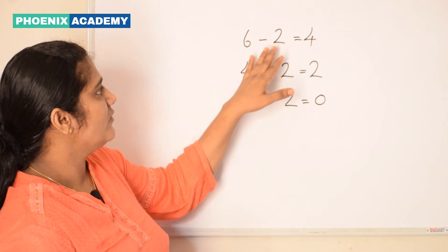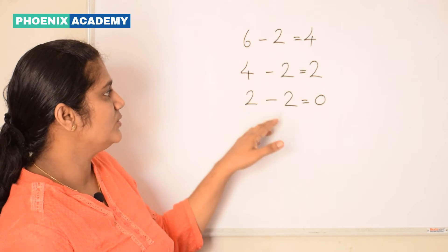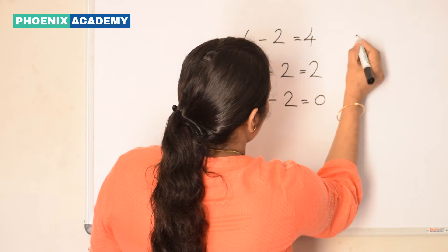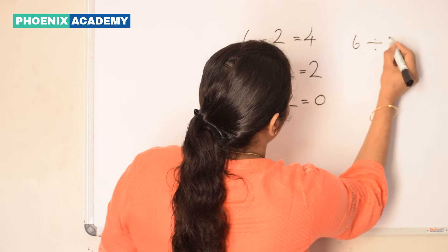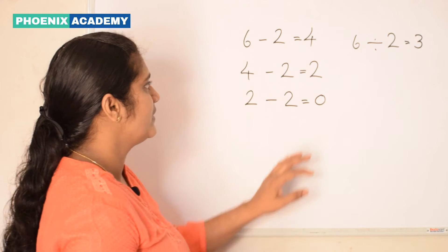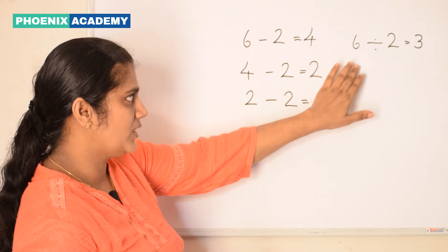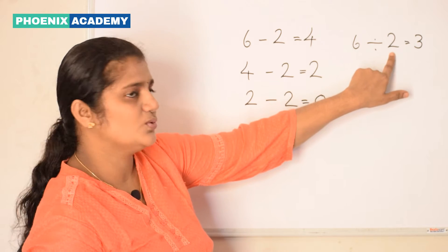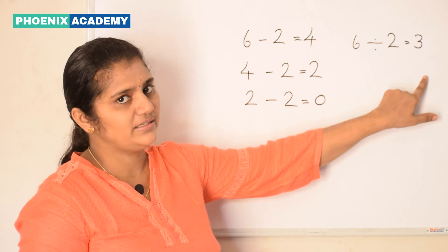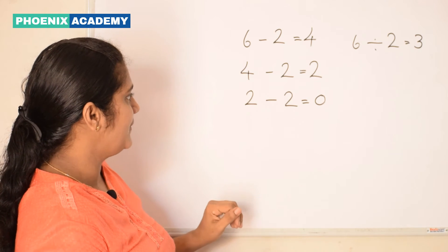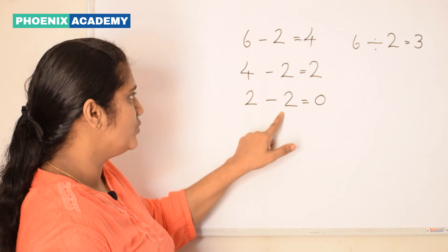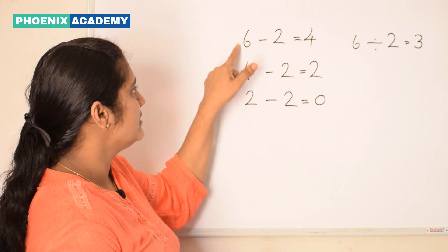How we got this? We subtracted 2 three times till we reached 0. So we can say 6 divided by 2 equal to 3. We divided the total number of bowls by 2 to get the number of bowls each person gets. Or in another way, we can say we will add 2 three times to get 6.